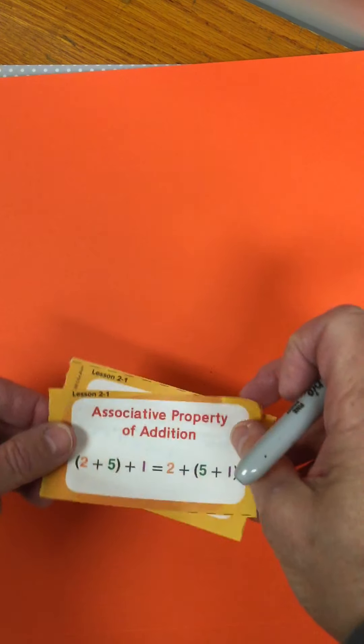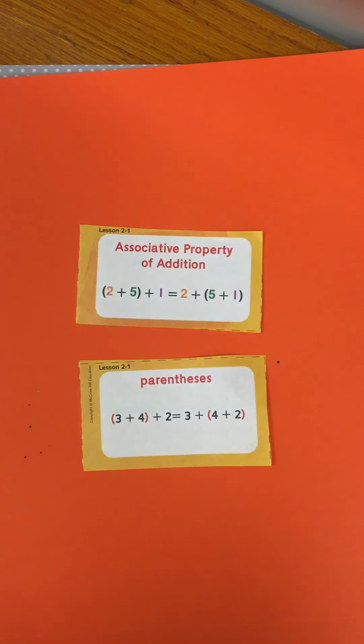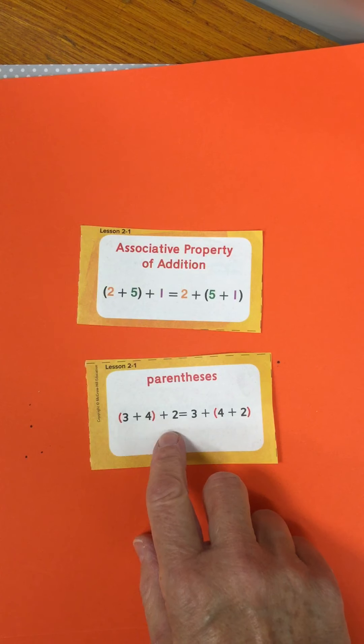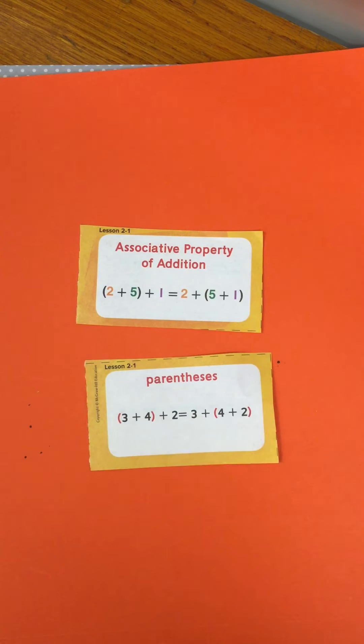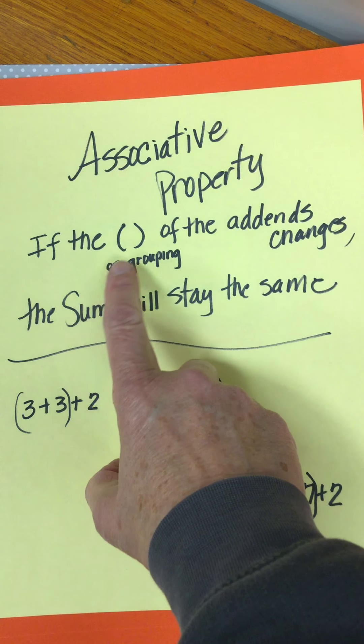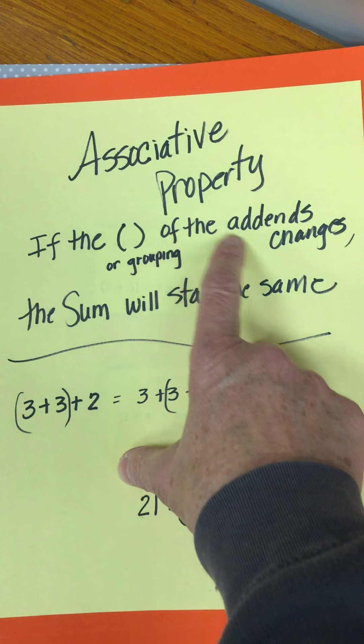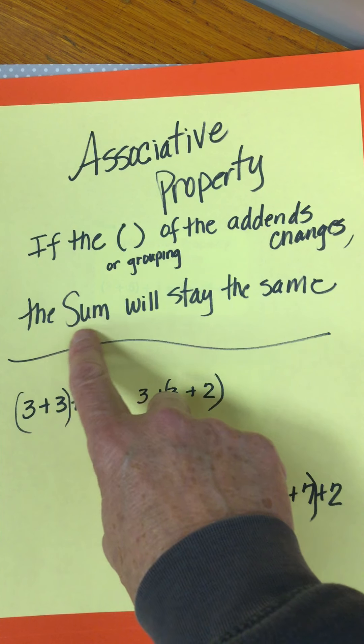Okay, and the last one that we want to cover then is the associative property. So this is the one where we keep the order of the numbers the same, we just move the parentheses. So what does that look and sound like for us? The associative property, I put it on here, if the parentheses, they also call that or the grouping of the addends changes, the sum will stay the same.